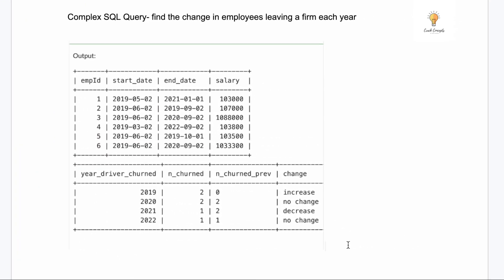Let's divide the question into simpler parts. Looking at the output, we need the year in which employees are leaving — that's the end_date column. We also need the number of employees leaving, which means we use the COUNT function. We don't need any other column; we can find the output using only end_date, counting based on each year.